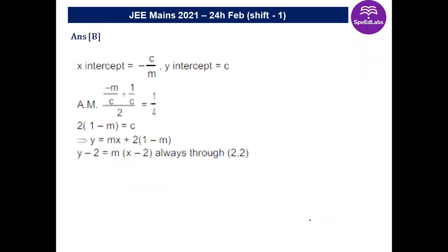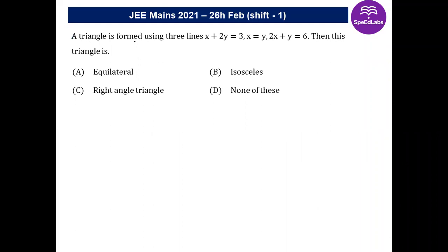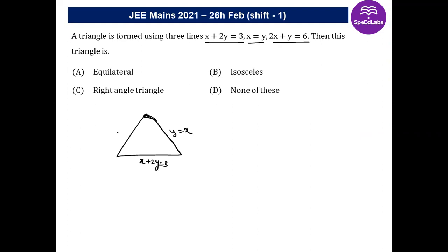The next question: a triangle is formed using three lines — x + 2y = 3, y = x, and 2x + y = 6. These three straight lines intersect to form a triangle, and we need to find the type of triangle — whether it is equilateral, isosceles, or right-angled.